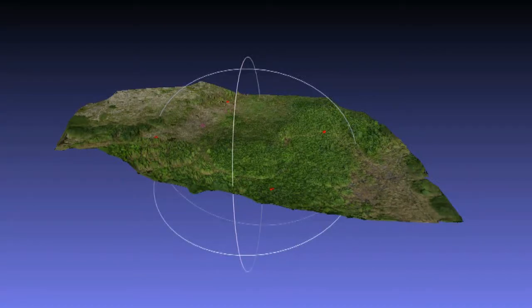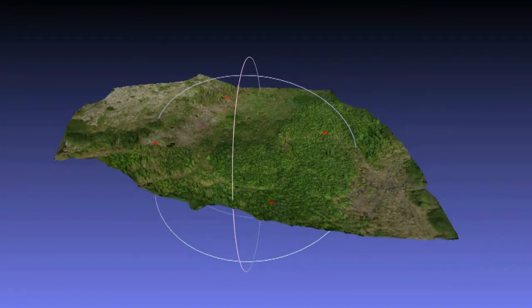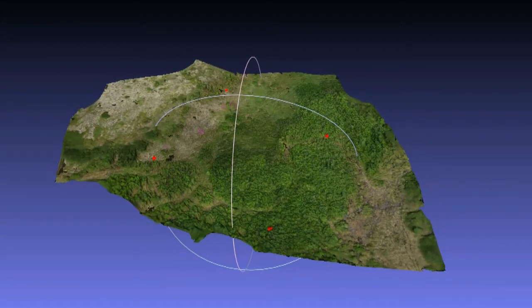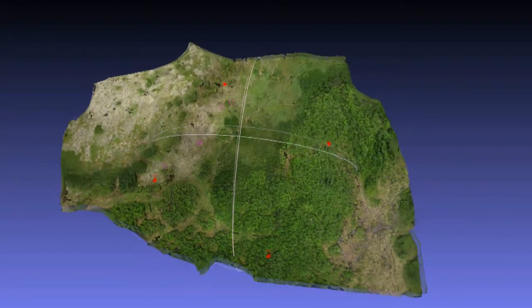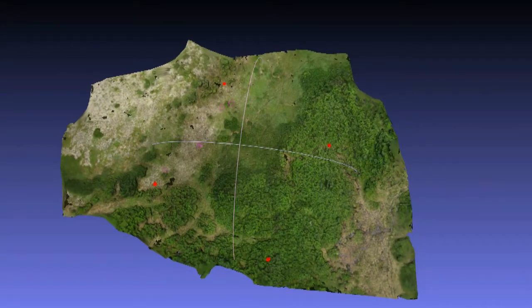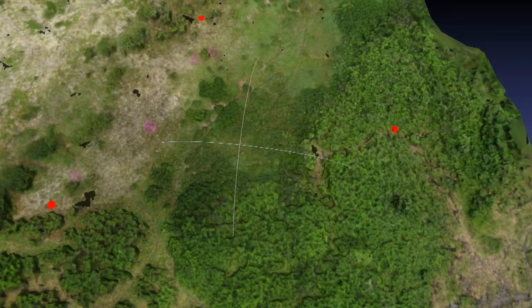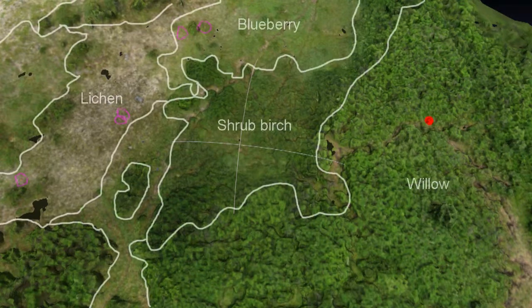This is a structure-from-motion model of an Alaskan tundra study plot made from seventy-six kite photos. The four red dots are the corners of the plot, which is fifty meters on a side at twenty-eight hundred feet above sea level. This plot is just uphill from the highest elevation forest in the area.